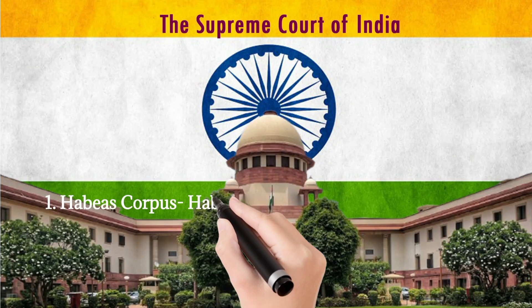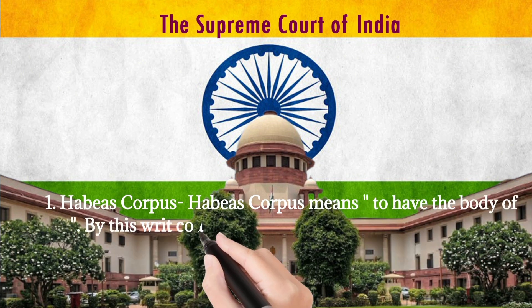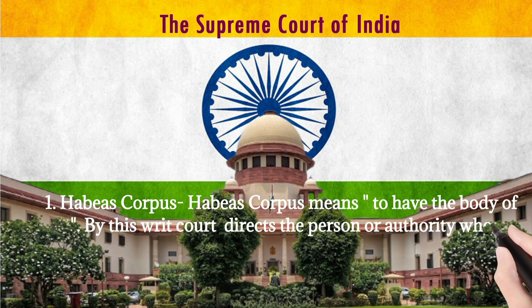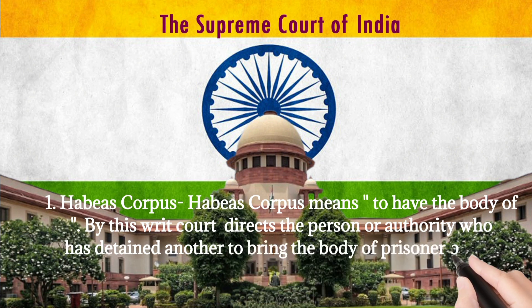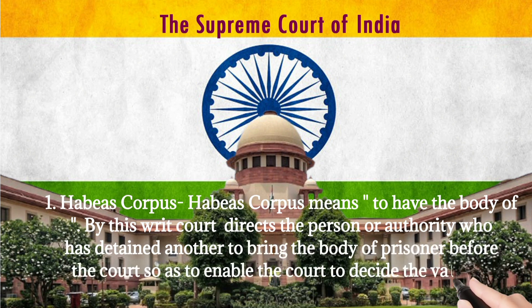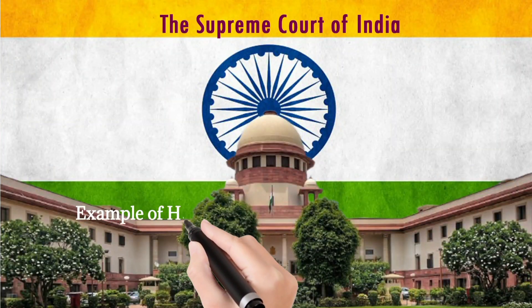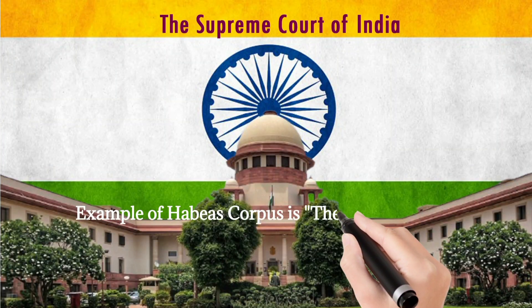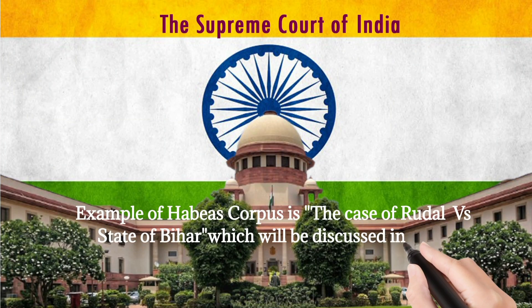Number 1: Habeas Corpus. Habeas corpus means 'to have the body of.' By this writ, the court directs the person or authority who has detained another to bring the body of the prisoner before the court, so as to enable the court to decide the validity, jurisdiction, or justification for such detention. An example of habeas corpus is the case of Rudal versus State of Bihar, which will be discussed in class.